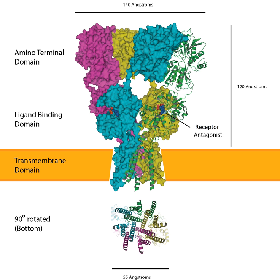Although they do interact with PSD-95 via stargazin, the prototypical member of the TARP family of AMPAR auxiliary subunits. Phosphorylation of AMPARs can regulate channel localization, conductance, and open probability. GluA-1 has four known phosphorylation sites at Serine-818, S-831, Threonine-840, and S-845. Other subunits have similar phosphorylation sites, but GluR-1 has been the most extensively studied.